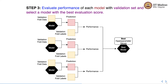In step three, we evaluate performance of each model with the validation set and select the model with the best evaluation score. We use the validation feature matrix to get predictions, compare those predictions with the actual validation labels, and calculate the performance measure. We repeat this for each model learned in the previous step and select the best model. The corresponding hyperparameter values are the best hyperparameter values, since they resulted in the best performance score on the validation set.